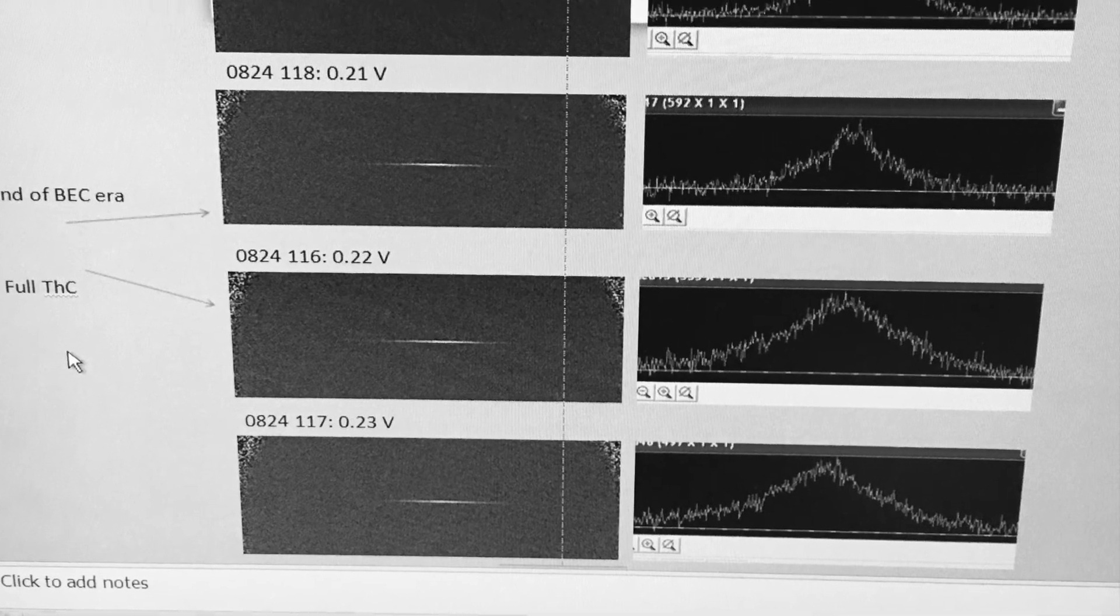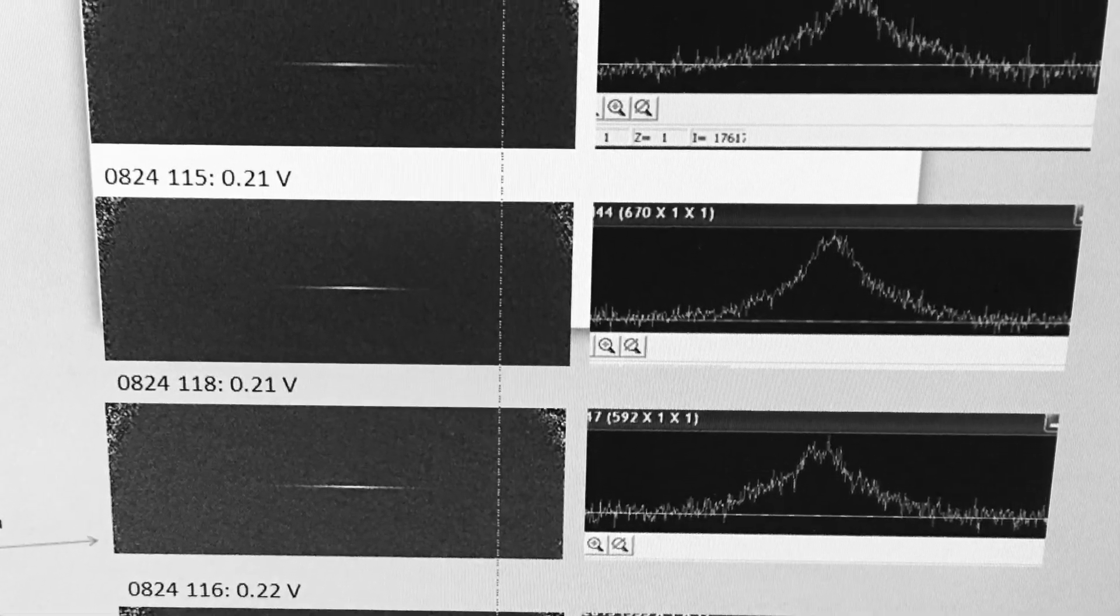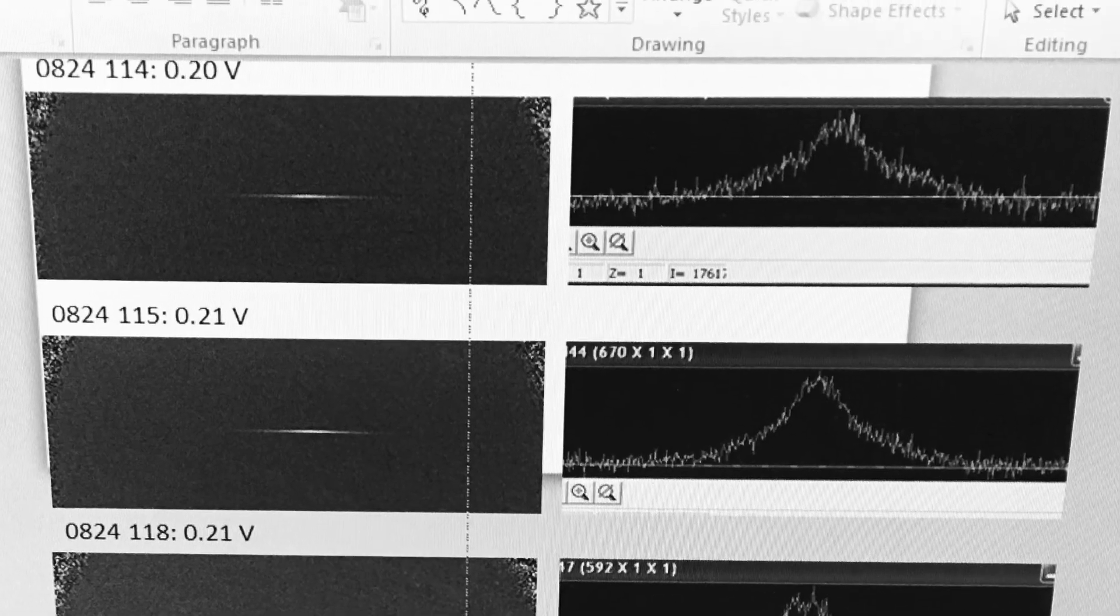All in all, we're able to cool atoms from room temperature clouds down to an ultra-cold atomic gas in 20 seconds. This means that we're able to make hundreds of what are known as Bose-Einstein condensates every day.